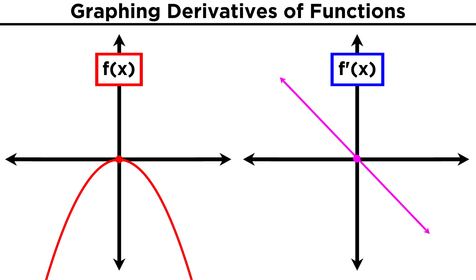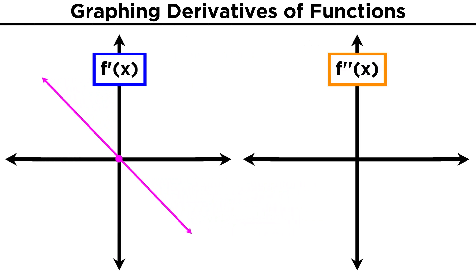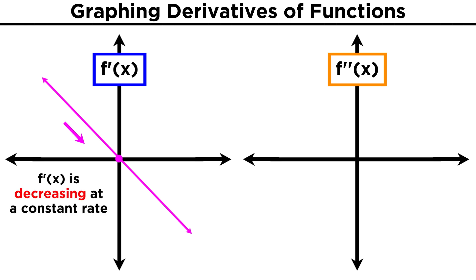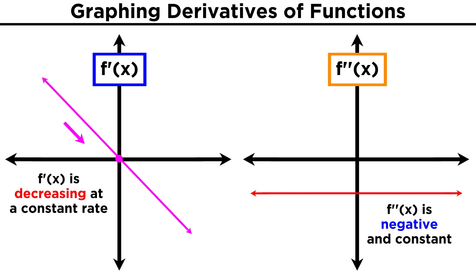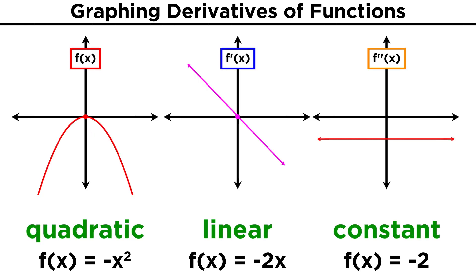And there we have a sketch of the first derivative. Now let's graph the derivative of this derivative, which will be the second derivative of the original function. Going left to right, the derivative starts positive, but we are looking at the rate of change, and the derivative is decreasing at a constant rate because it is a line with a fixed slope. That means the second derivative will be a horizontal line below the x-axis — the slope of the first derivative is constant, so the second derivative is constant. We went from a quadratic function to a linear function to a constant, which also makes sense in the context of computing derivatives.